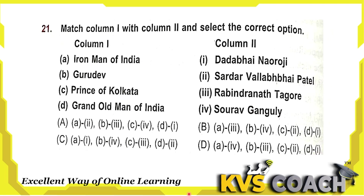Next question: match column 1 with column 2 and select the correct options. Column A is the title given and column B is the person's name. Iron Man of India — Sardar Vallabhbhai Patel. Gurudev — Rabindranath Tagore. Prince of Kolkata — Sourav Ganguly. Grand Old Man of India — Dadabhai Naoroji. So the correct matching is A2, B3, C4, D1 — option A is the right answer.